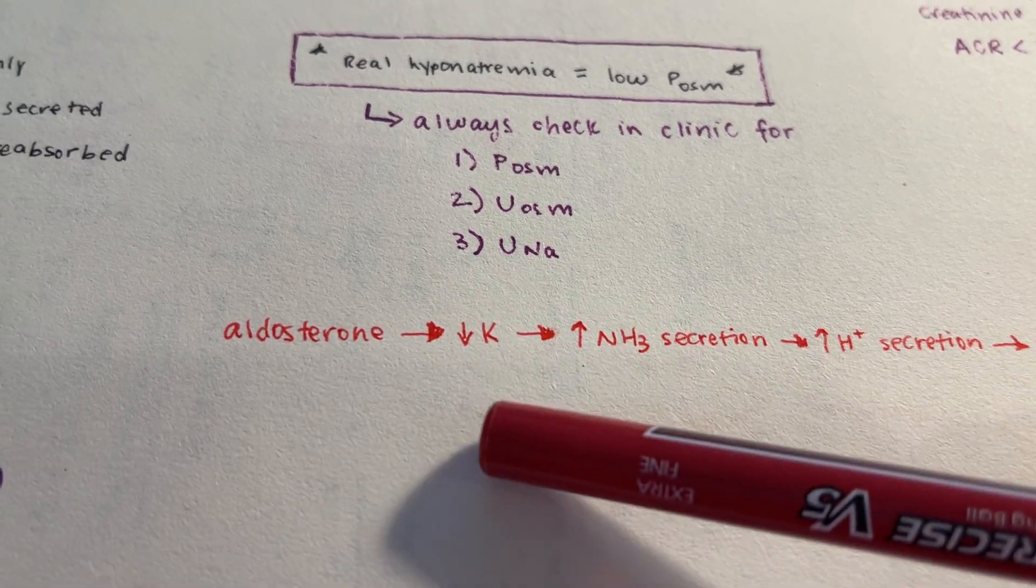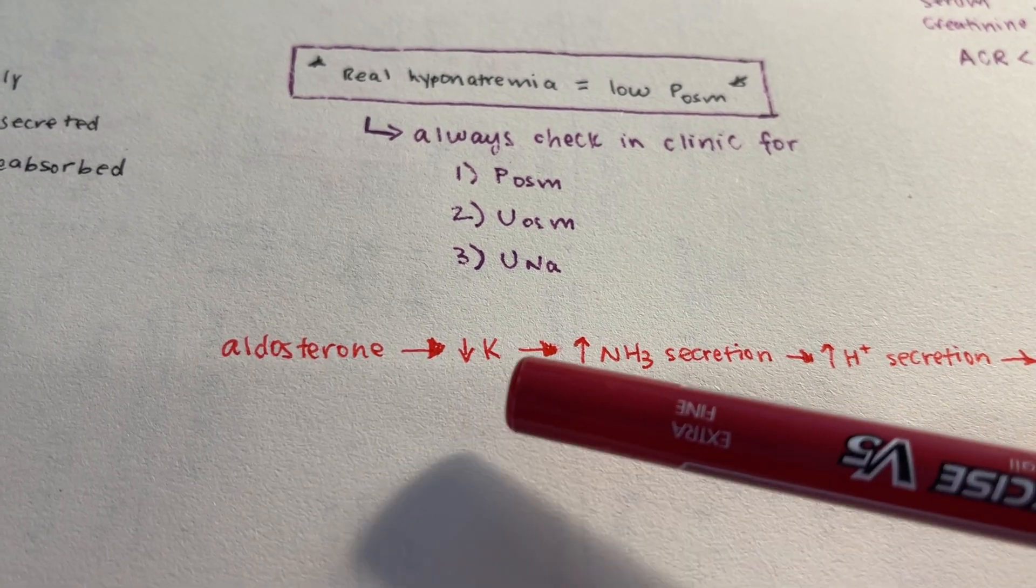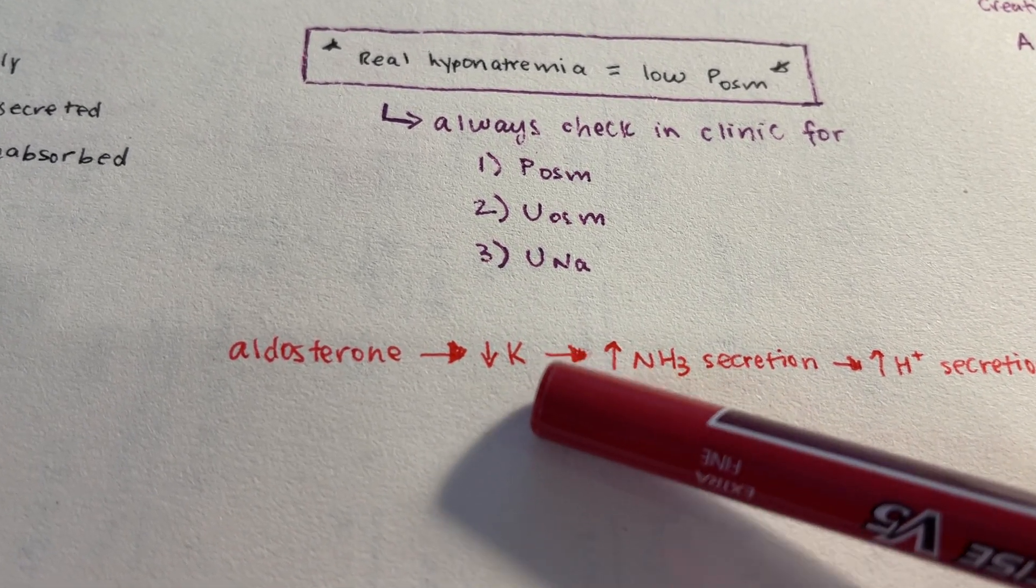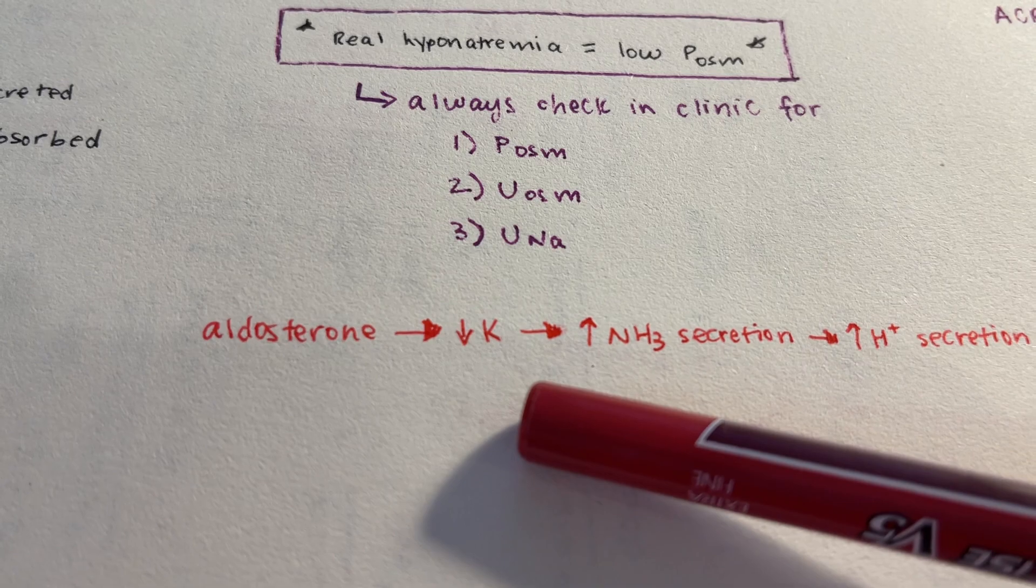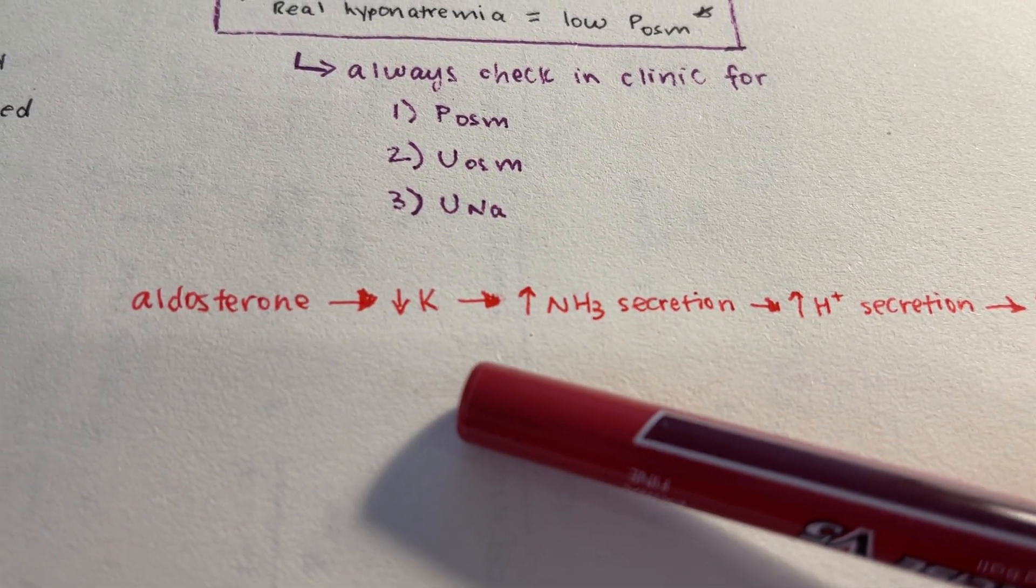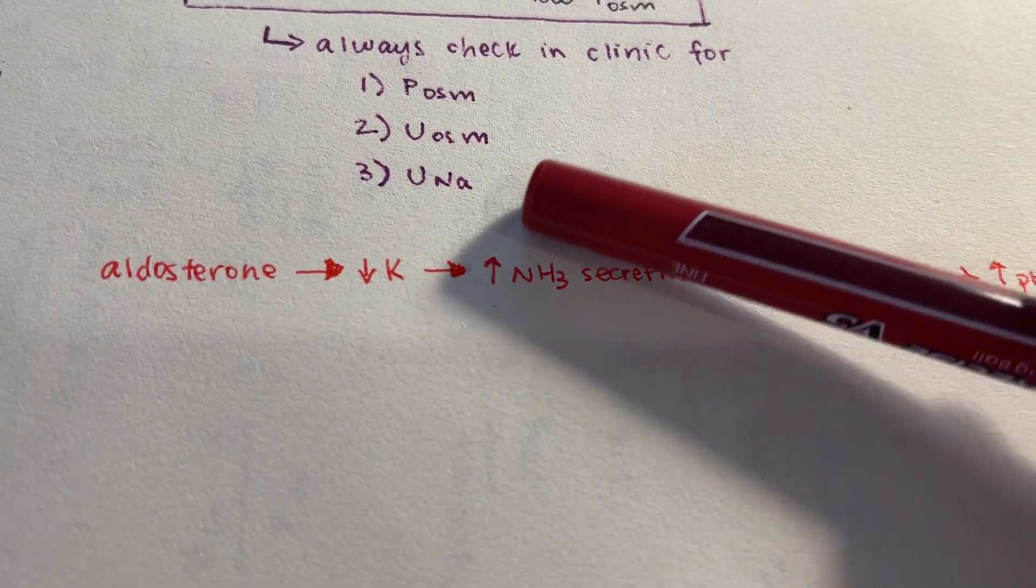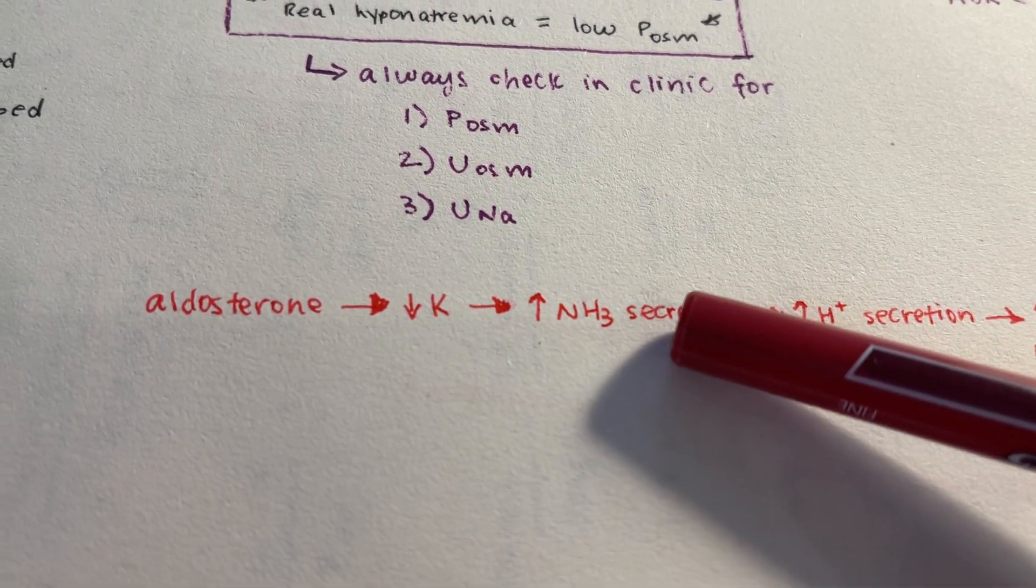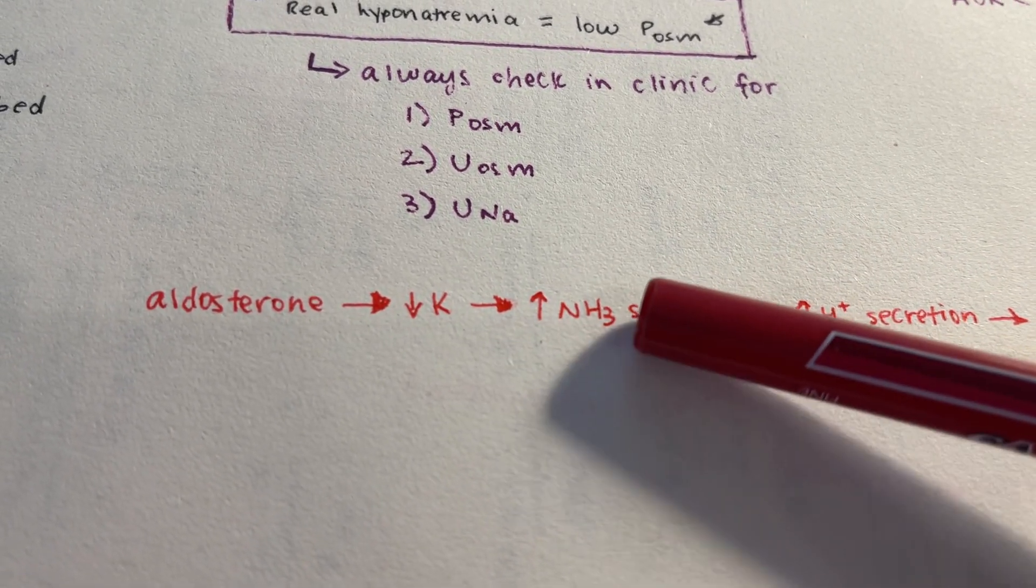What's interesting is that hypokalemia actually stimulates the production of ammonia in cells in the kidney, like the proximal tubule cells. So you'll have cells in your kidney, like your proximal tubule cells, making a lot of ammonia, or NH3.